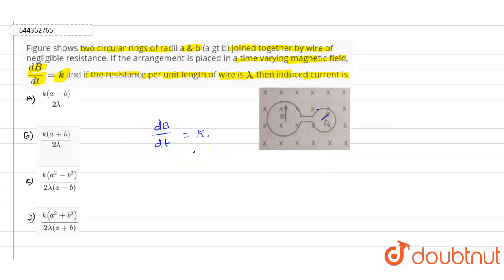to find out the induced current value, ε equals dΦ/dt. Here, Φ is nothing but B into A—magnetic field times the area. So ε equals dB